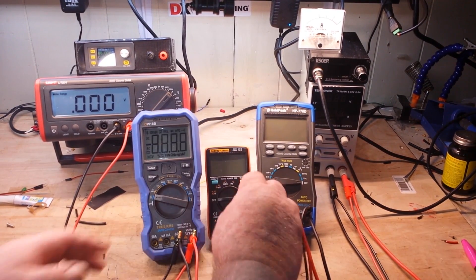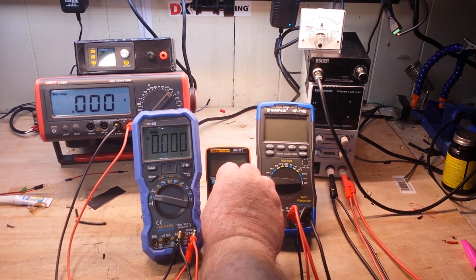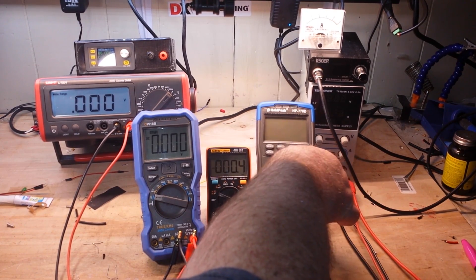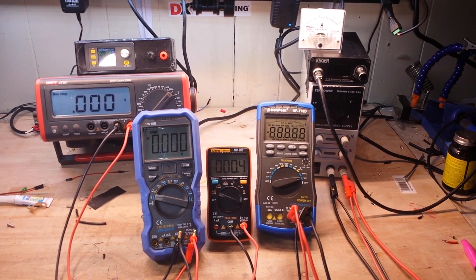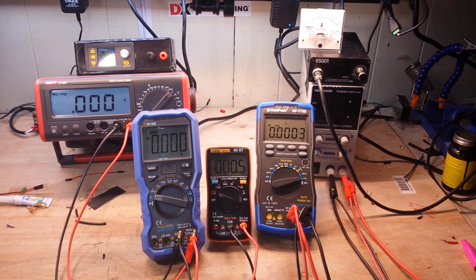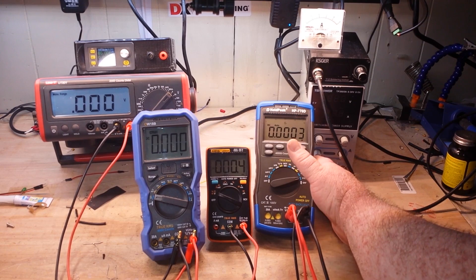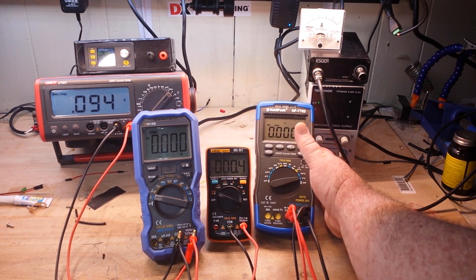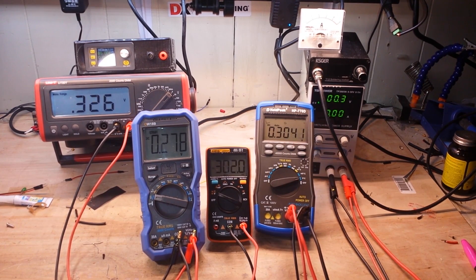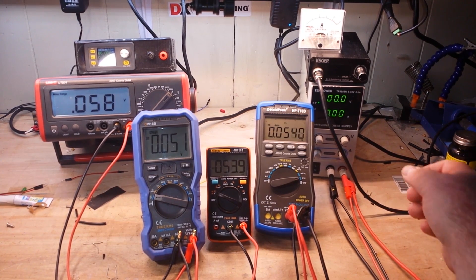So what I am going to do here is I am going to turn all our meters on into voltage mode. And then I am going to turn on the power supply, and right now we are down at zero. So we are going to put it for 1 volt.